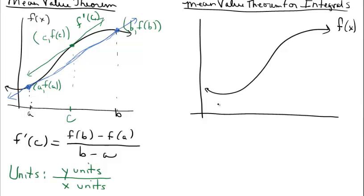I'm going to go ahead and draw the function differentiable though. I'll call this f of x. If we have a continuous function on a closed interval a to b — that is part of the theorem — when we think about integrals, we're usually talking about the space between a function and the x-axis. Just imagine all of this area from the curve to the x-axis.